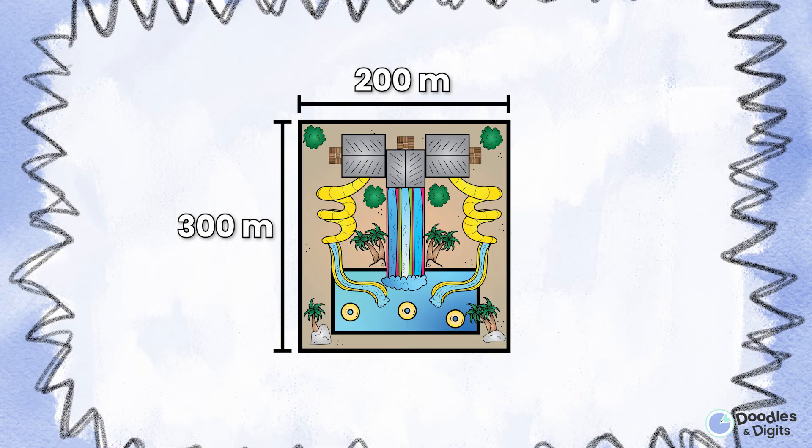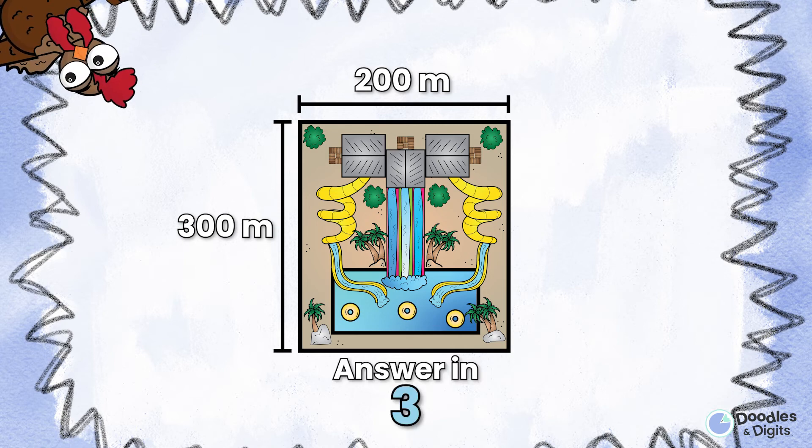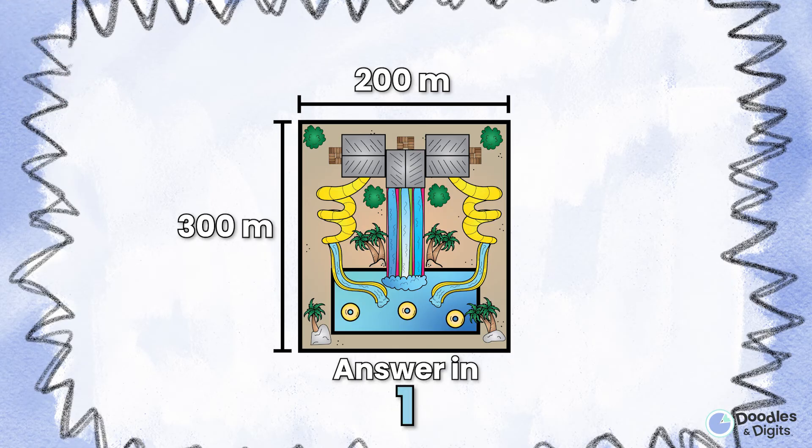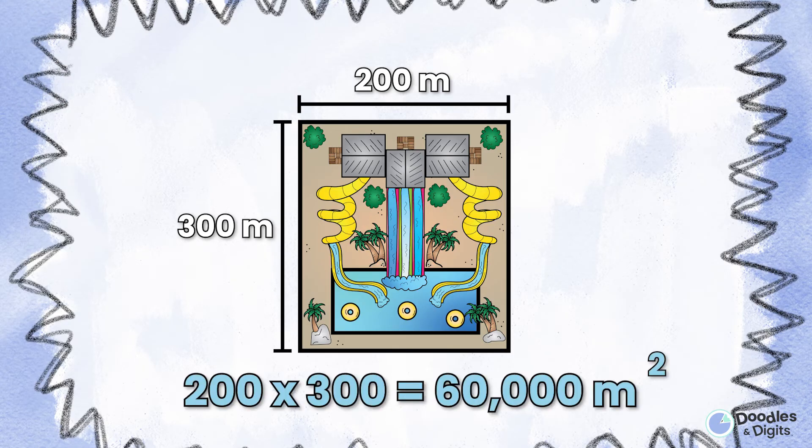Here's a water park. 200 meters and 300 meters are the dimensions. 200 times 300 equals 60,000 meters squared.